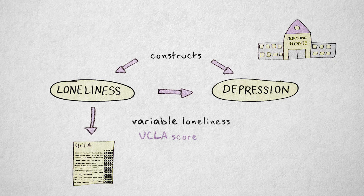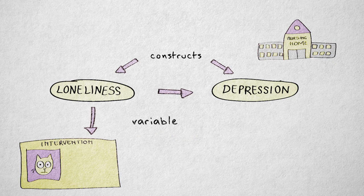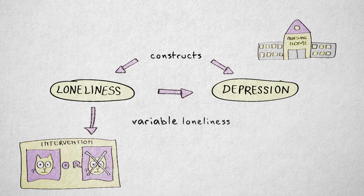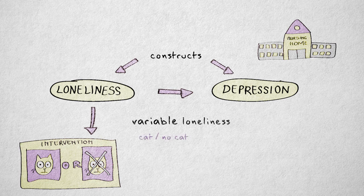If I hypothesize that loneliness causes depression, I would be better off manipulating instead of measuring loneliness. I could give one group of elderly people a cat to take care of, comparing them with a control group without a cat. I've now operationalized loneliness by creating two levels of loneliness — the variable loneliness now refers to high or low loneliness expressed through the presence or absence of a feline companion.